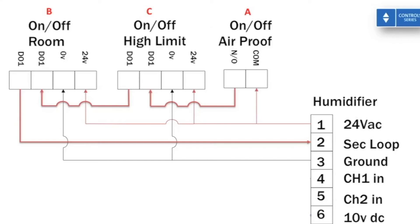The final step is to take care of the modulating loop — the second control loop on the humidifier — by using a jumper to fake a demand signal of 100%. Jumping typically pins 6 to 4 and changing the respective parameters in the humidifier's keypad for the corresponding voltage range tells the humidifier to run at 100% as long as the first security loop is completed. Recall that all three devices must complete the loop for the humidifier to run. Your wiring is now complete.